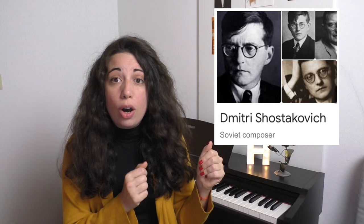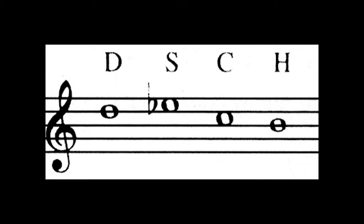Another composer known for cryptic messaging is Shostakovich. He used the musical cryptogram system to build themes based on his own name across many pieces. But his most important hidden message comes in the Fifth Symphony — and it's one that could potentially have cost him his life.